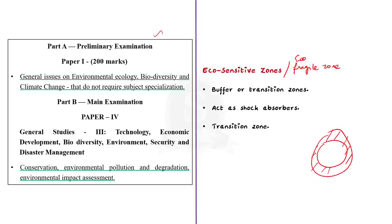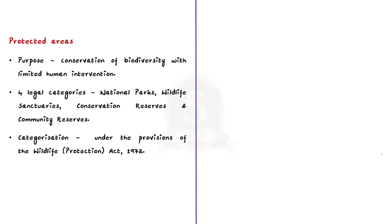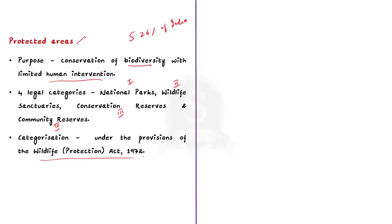This means that eco-sensitive zones are created as shock absorbers for the protected areas. Now let's see about the term protected areas. Protected areas are regions of land or sea which are given certain levels of protection. They cover nearly about 5.26% of India's land area. The government declares some areas as protected areas mainly for conservation of biodiversity with limited human intervention and limited exploitation of resources. The Indian government has designated protected areas into four different categories as per the provisions of the Wildlife Protection Act 1972: national parks, wildlife sanctuaries, conservation reserves, and community reserves.